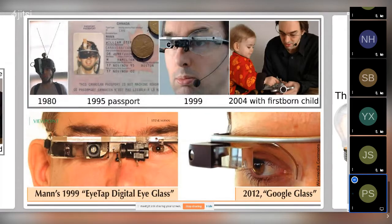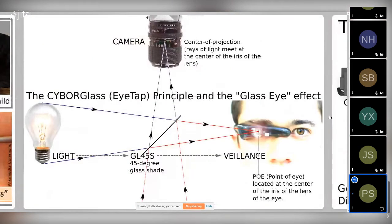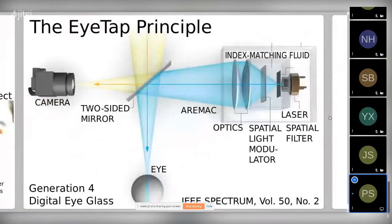This is the evolution of the EyeTap technology. There's a 45-degree beam splitter; you can see a camera over the nose bridge that looks like a glass eye — that's why we used to call it 'glass.' The EyeTap principle is that the eye itself becomes a camera. Rays of light from reality are reflected off into a camera and then reinstated back into the eye in perfect registration, creating a point-of-eye sensing and display. Described in IEEE Spectrum, volume 50, number 2: 'The EyeTap Principle.'